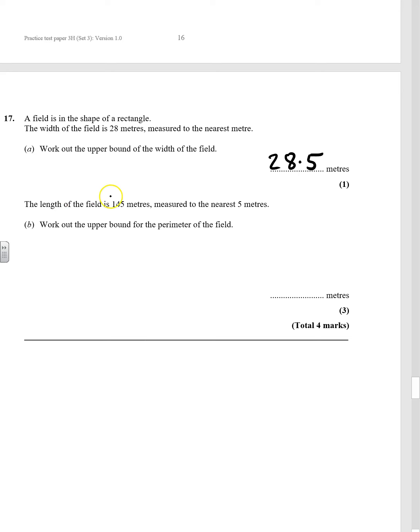The length of the field is 145 metres measured to the nearest 5 metres this time. Work out the upper bound of the perimeter.